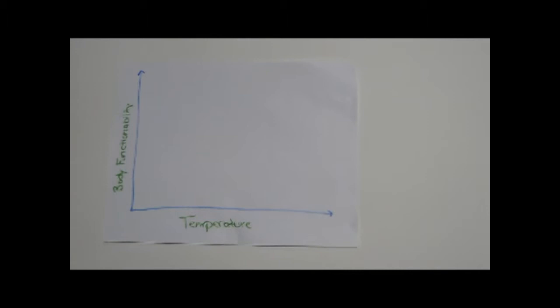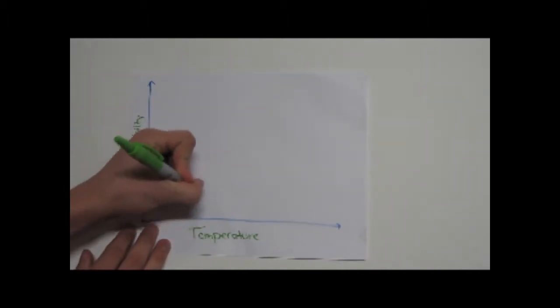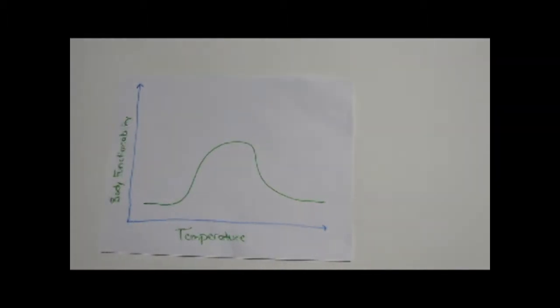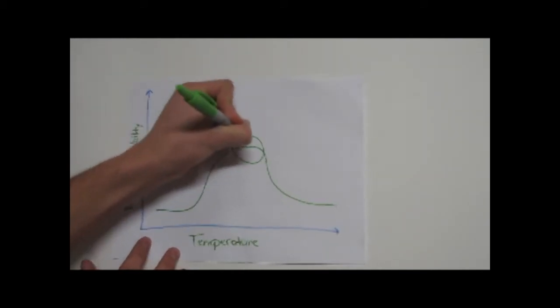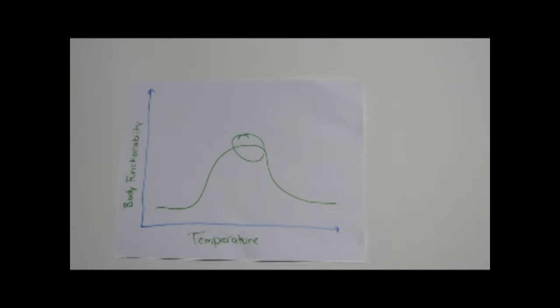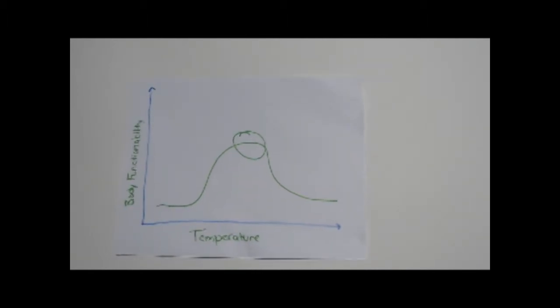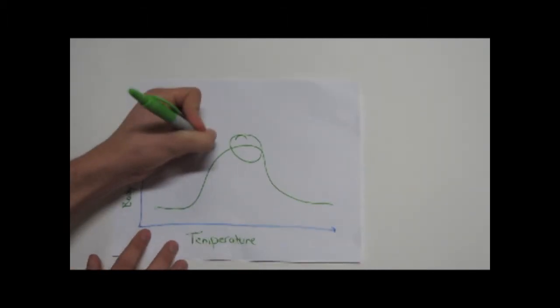All this has to do with thermoregulation. Thermoregulation is a process by which animals maintain an internal temperature within a tolerable range. Thermoregulation is critical to survival because most biochemical and physiological processes are very sensitive to changes in body temperature.